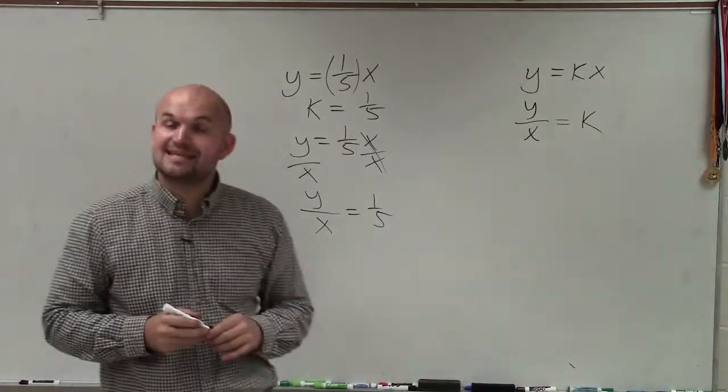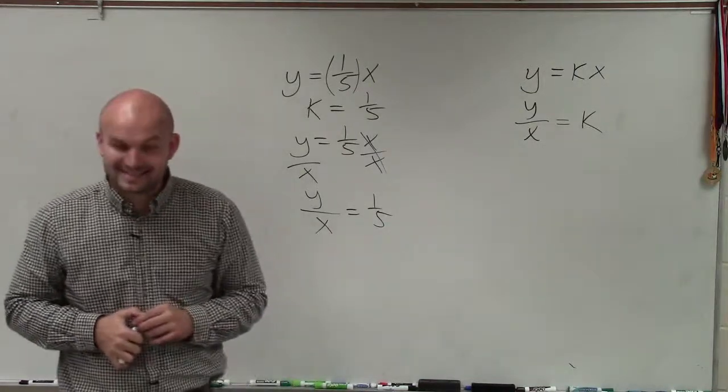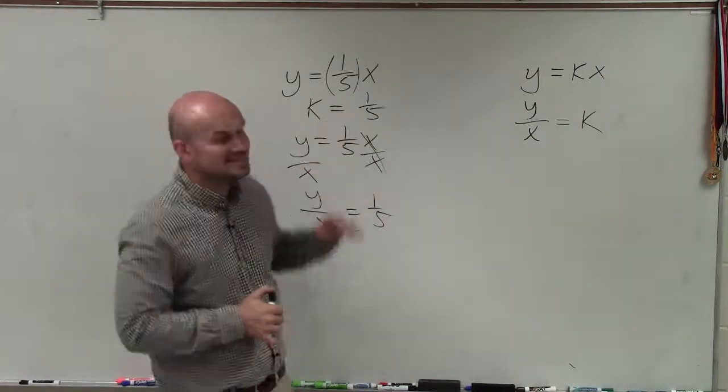All right? So there you go, ladies and gentlemen. This is an example of direct variation, where our constant is equal to 1 fifth. Thanks.